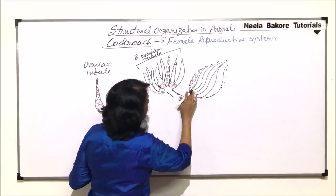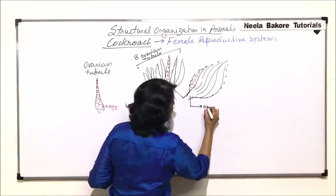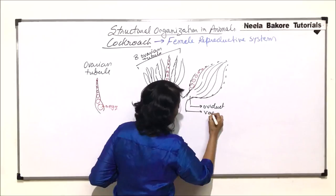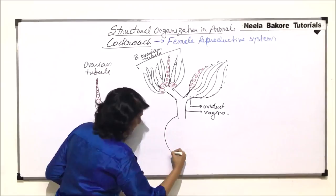All these must be shown. From all these eight ovarian tubules, we find that there are two ducts coming. These two ovarian ducts join to form a slightly wider duct which is known as the vagina.